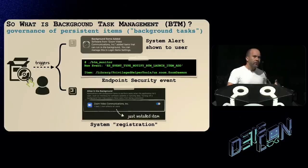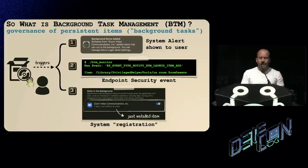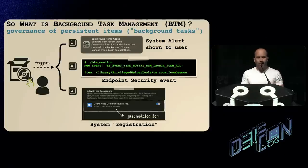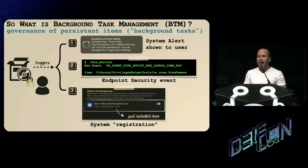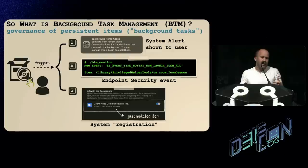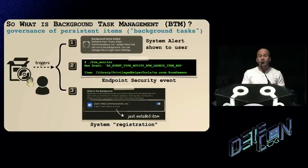Let's start with an overview — defining what background task management is. This was largely introduced in macOS 13, the most recent version of macOS. It's a system designed by Apple to govern and consolidate persistent items, or in Apple's parlance, background tasks. Persistent items are simply processes that have installed themselves in a manner such that every time the system is rebooted or the user re-logs in, they are automatically re-executed. An auto-updater that runs every day is a good example. Malware does the same thing — if malware does not persist and you reboot your system, you've just disinfected yourself.